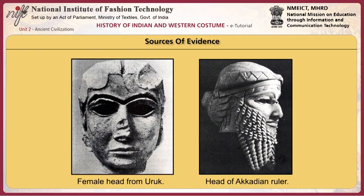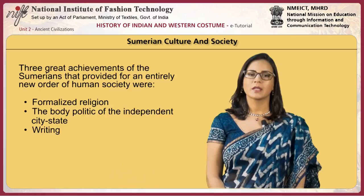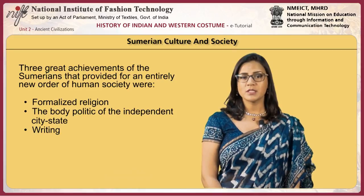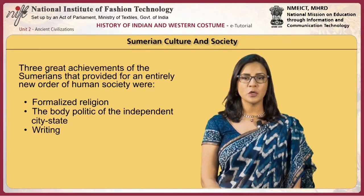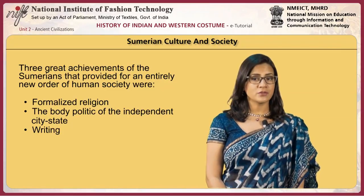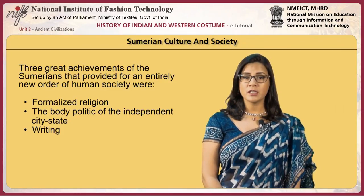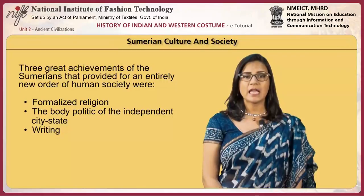Sculptures of figurines, statues, wall decoration, relief work, and motifs found on pottery and other applied arts provide the largest source of information about the art, culture and artistic style of Mesopotamian culture. The three great achievements of the Sumerians that provided for an entirely new order of human society were formalized religion, the body politic of the independent city-state, and writing.